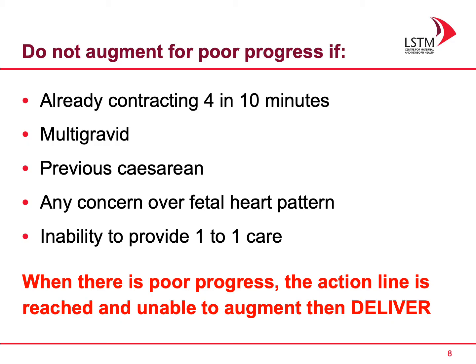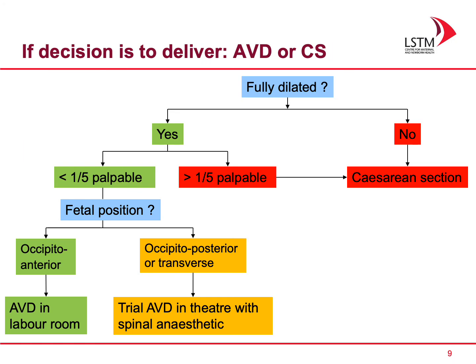When there is poor progress, the action line is reached, and you are unable to augment, then you need to deliver the woman. If you have made a decision to deliver, you next have to decide whether this should be by assisted vaginal delivery or caesarean section. To do this you can follow the flow chart shown here.